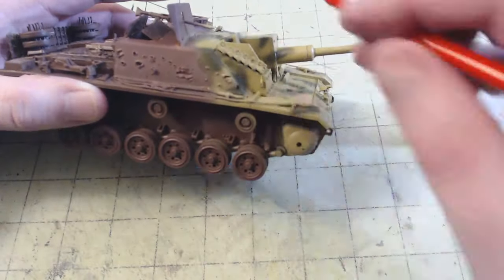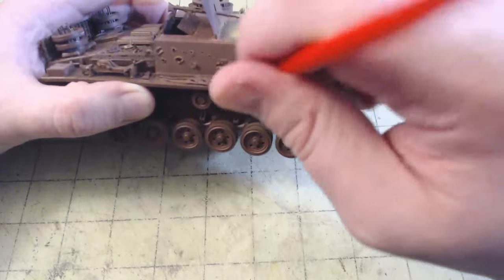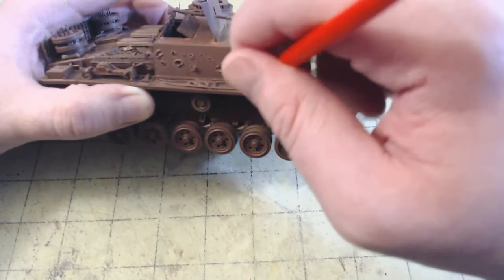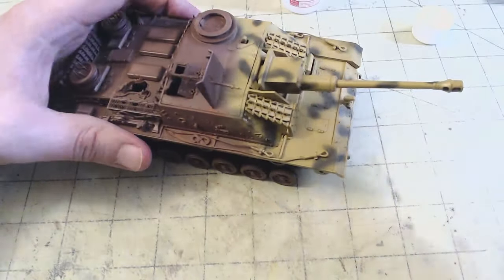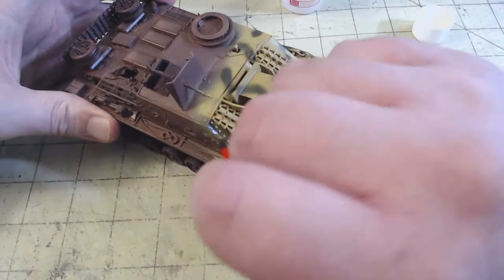And then it was time for another new technique, paint chipping using Microsol. Yes, you heard that right, Microsol, as in the decal setting solution. When applied to paint, it can act just like a chipping fluid. This is why I applied a matte varnish under the Dunkle Gelb.